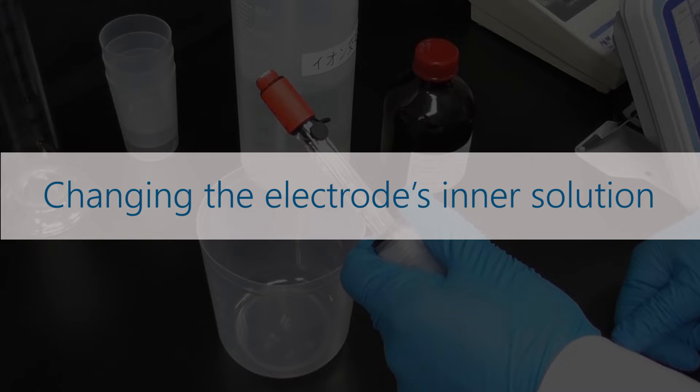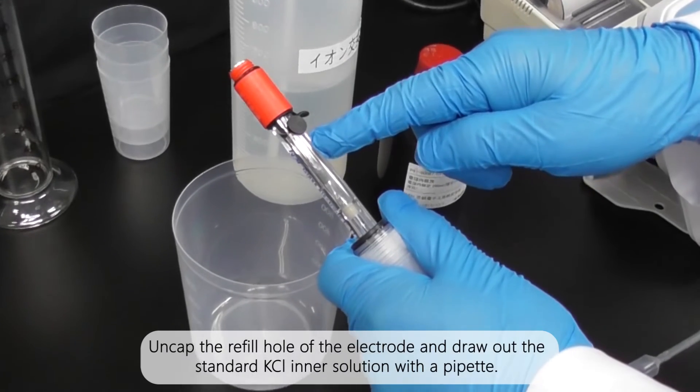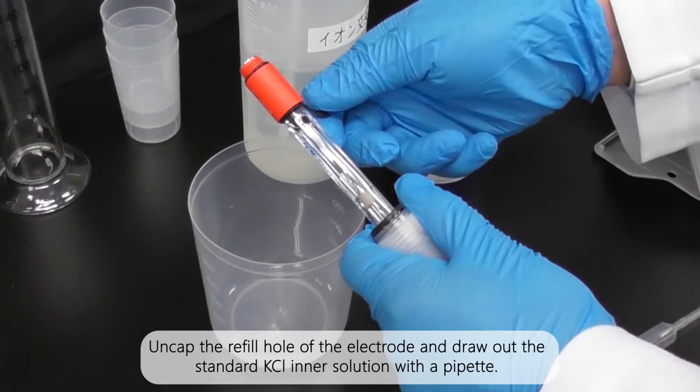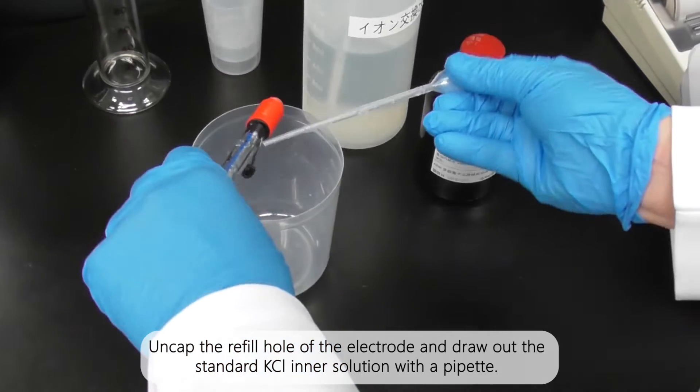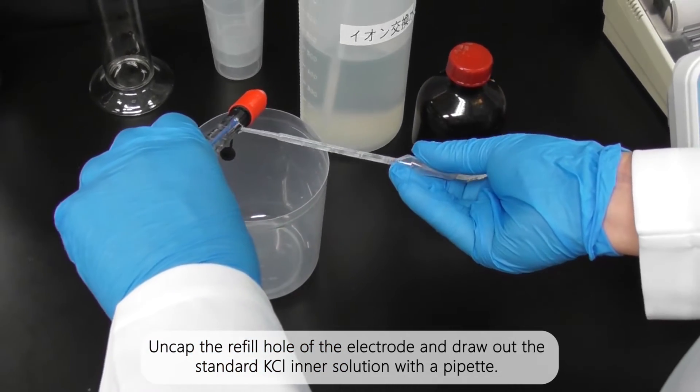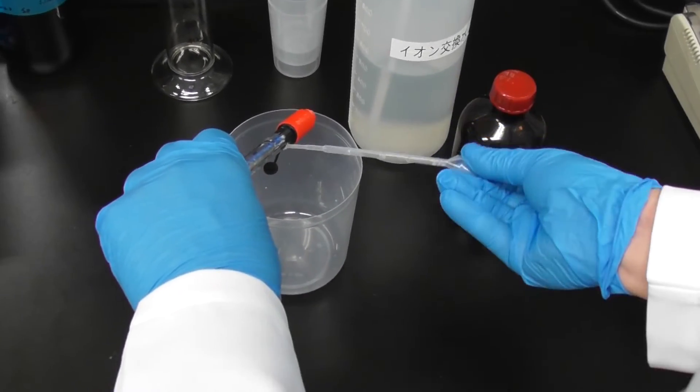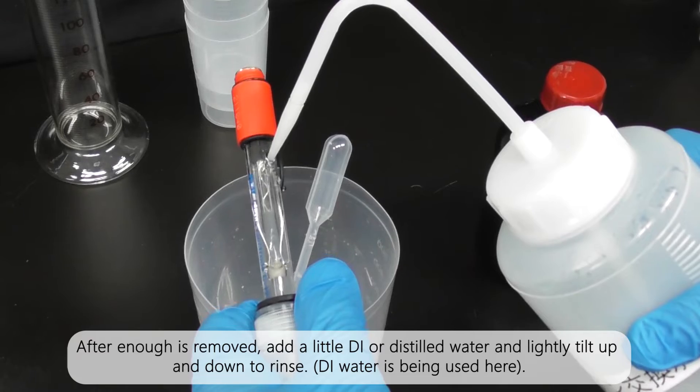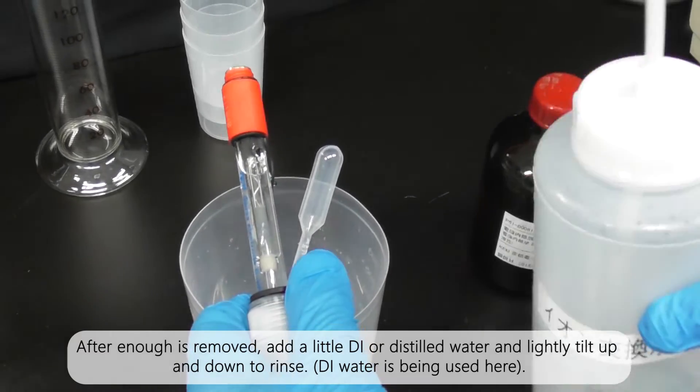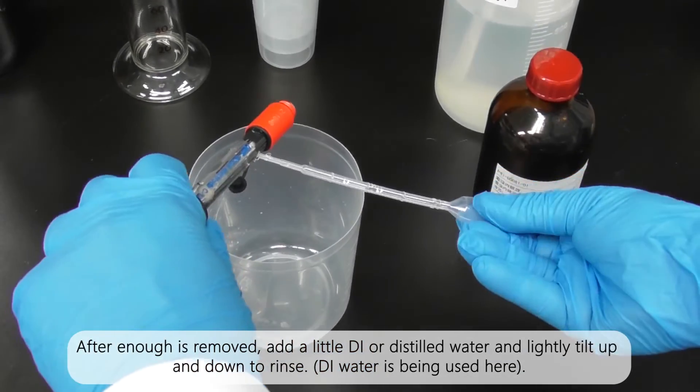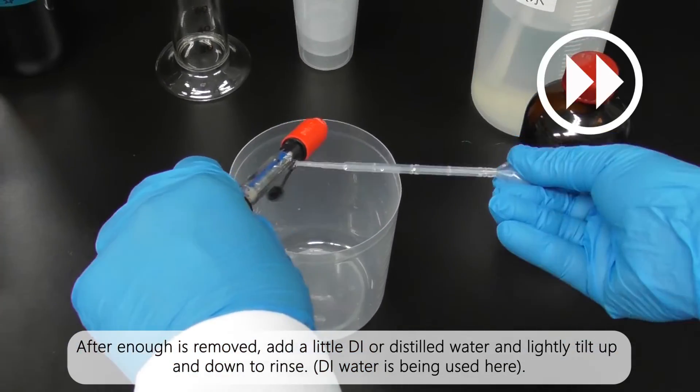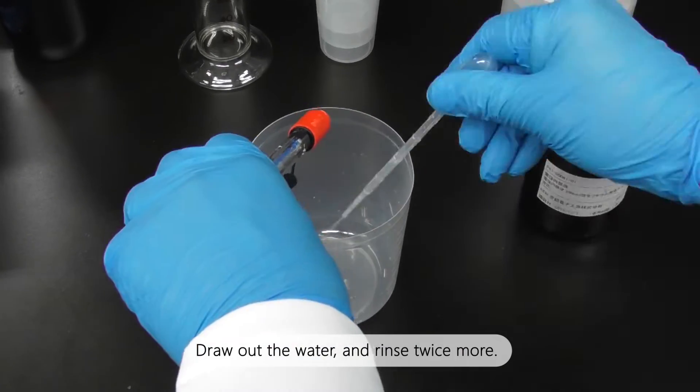Changing the electrode's inner solution: Uncap the refill hole of the electrode and draw out the standard potassium chloride inner solution with a pipette. After enough is removed, add a little DI or distilled water and lightly tilt up and down to rinse. Draw out the water and rinse twice more.